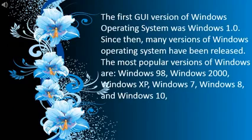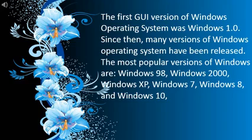The first GUI version of Windows operating system was Windows 1.0. GUI stands for graphical user interface. It allows the user to interact with electronic devices through graphical icons. This is the best example of your computer screen. You are able to see the icons, menus, and start button — these all are GUI, graphical user interface.